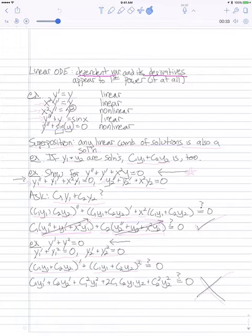So to do some examples, here we have y' equals y. That's linear because we have these different additive terms that just involve something with the dependent variable to the first power. Here we have x squared y' equals y. That's linear for the same reason.